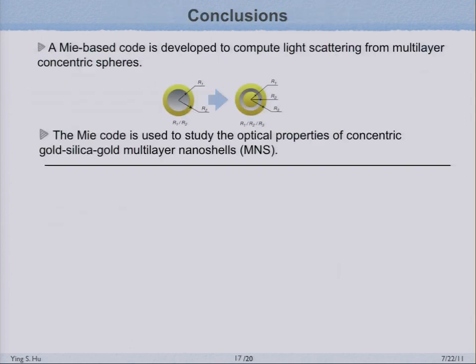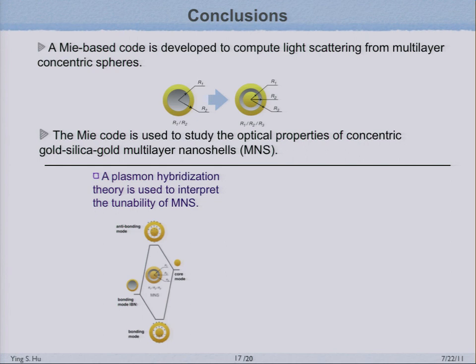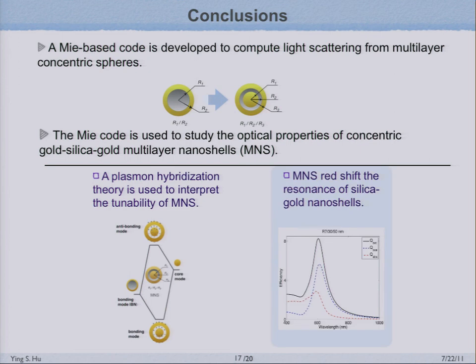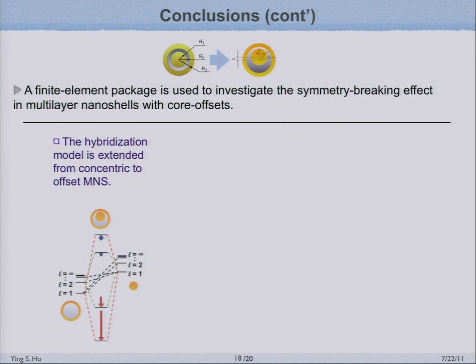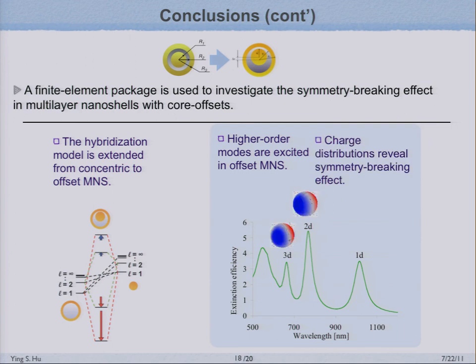To conclude: I showed a Mie code for multilayer spheres and used it to examine the optical properties of concentric multilayer nanoshells. I used the hybridization model to predict that a multilayer nanoshell can redshift the resonance compared to a conventional nanoshell. In an extended study, I used the finite element method to look at offset multilayer nanoshells, showing that higher-order modes can be excited due to mixed interaction between modes of different orders.